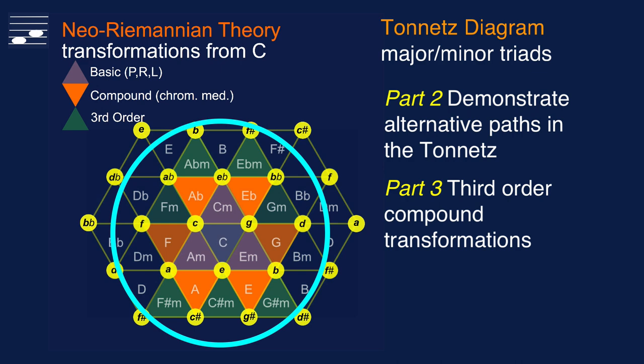As the colored triangles show, many major and minor triads can be reached in a single transformation from the starting C major triad. Although some are more likely to be used than others, as indicated by the lighter and darker shades.